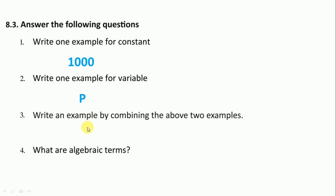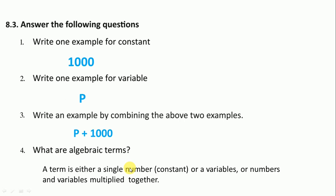Write an example by combining the above examples. We write P plus 1000. What are algebraic terms? A term is either a single number (constant) or a variable, or numbers and variables multiplied together.